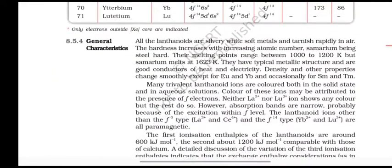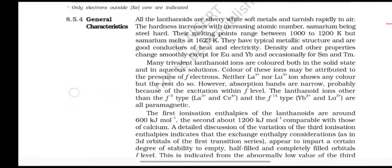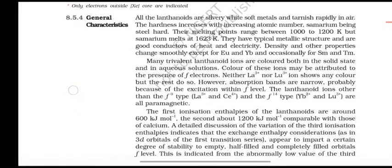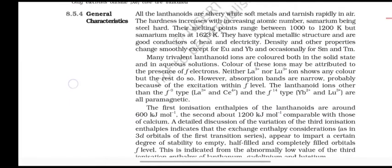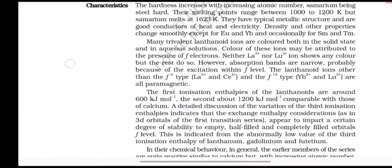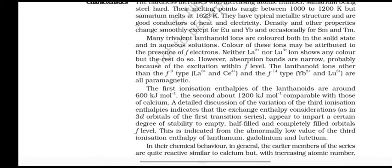The other characteristics: all the lanthanoids are silvery soft metals and tarnish rapidly in air. The hardness increases with increasing atomic number, samarium being steel hard. Their melting points range between 1000 to 1200 Kelvin, but samarium melts at 1623 Kelvin. They have typical metallic structure and are good conductors of heat and electricity.